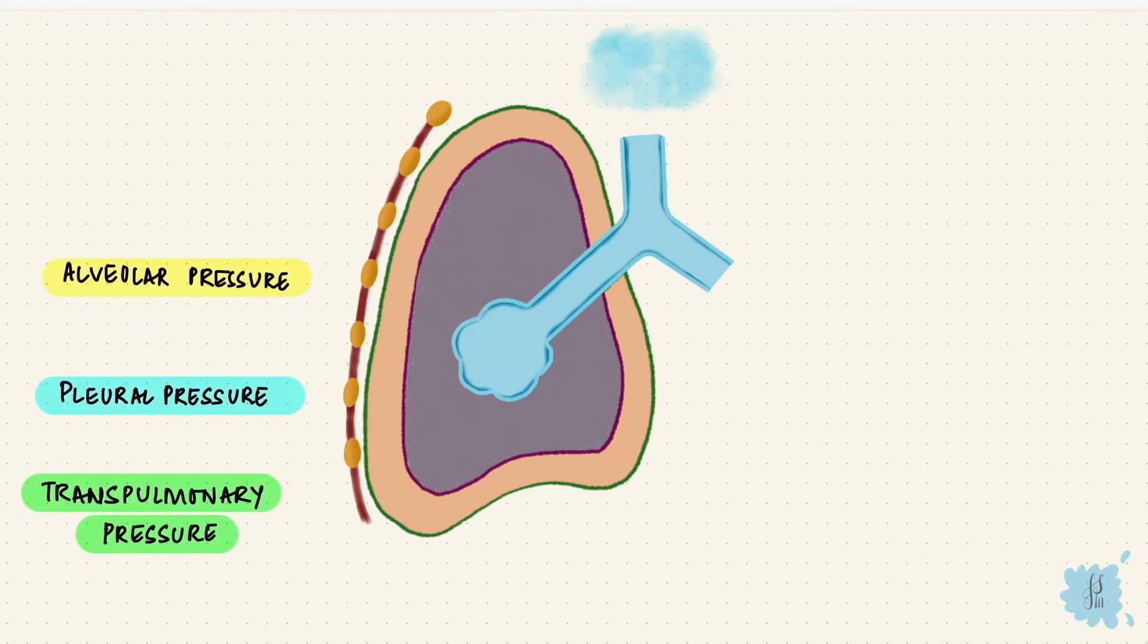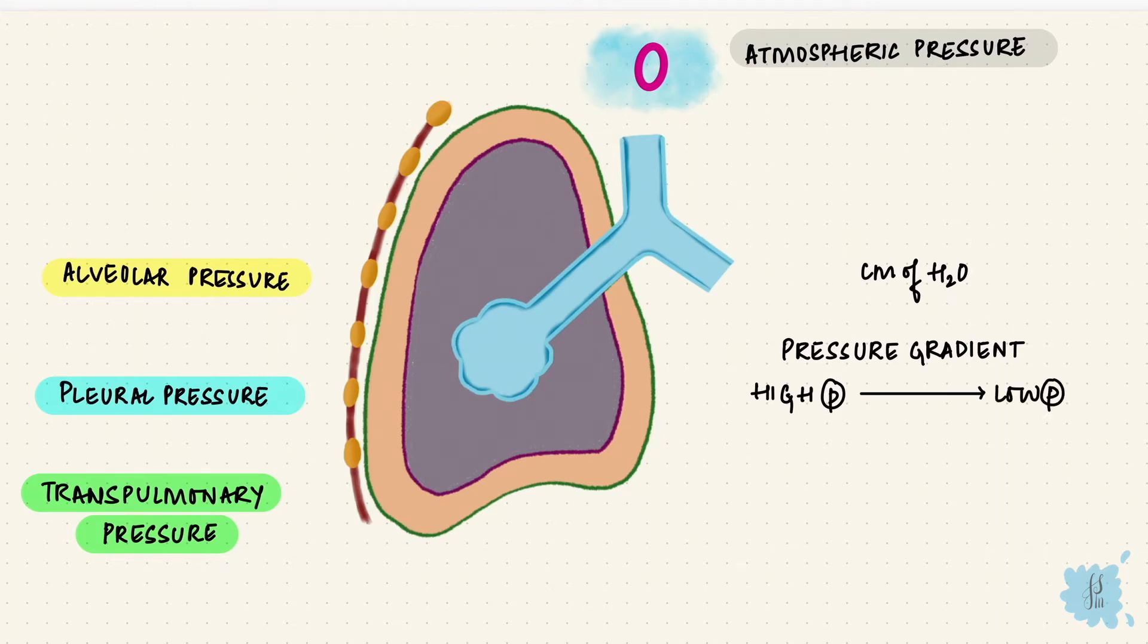The pressures are in centimeters of water and are in relation to atmospheric pressure. To understand it, we consider atmospheric pressure to be zero, so that's our reference pressure. Air moves along a pressure gradient, from high pressure to low pressure. So that's what drives the air to move between the lungs and the atmosphere.